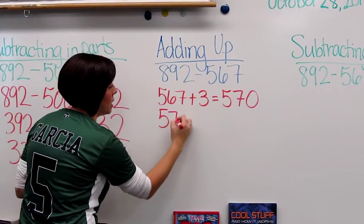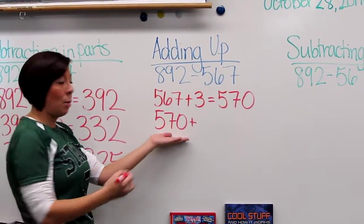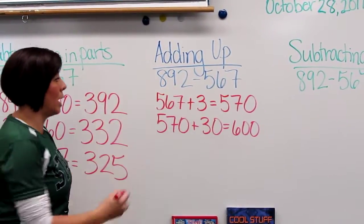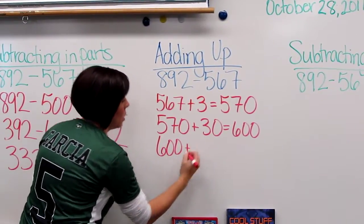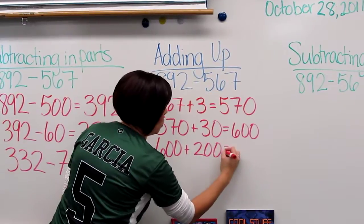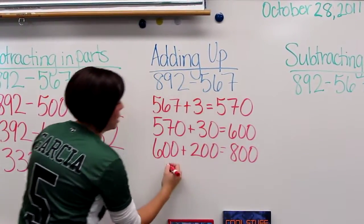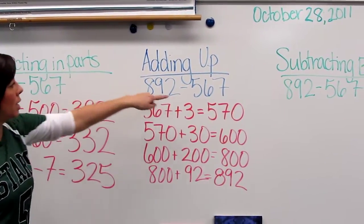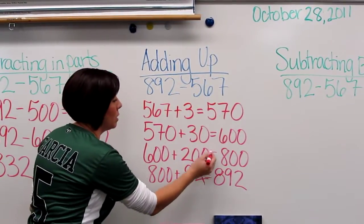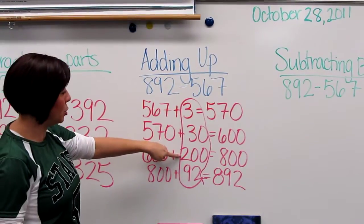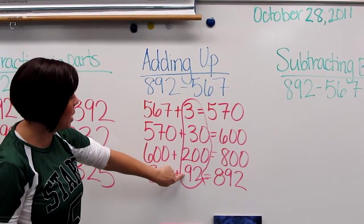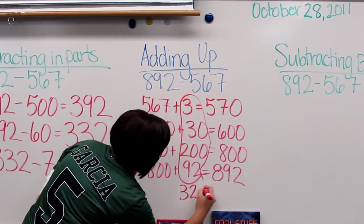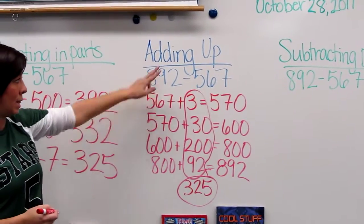Then I drop my 570 down and I take plus 30 gets me up to 600. Now from 600 it's easy to see where I can go from here. 600 plus 200 would give me 800. And now I'm really close. 800 plus 92 gets me up to 892. And so I started here at this number and I've added up. Now what do I do to get my answer is I add this up. 200 plus 92 gives me 292, then I add in the 30 and the 3 there and that gives me 325. And that's how I add up.